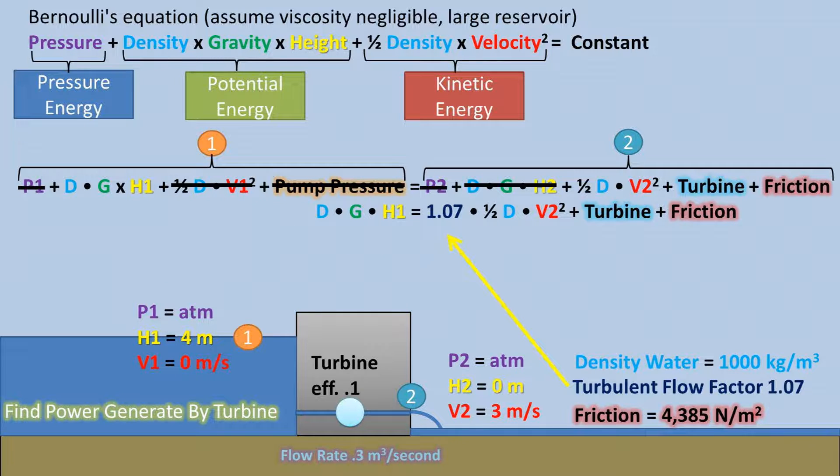We are left with this equation. In this problem, we have a turbulent flow factor. This is basically stating that there will need to be 7% more kinetic energy in order to accommodate the turbulent or chaotic flow. So, we will multiply the kinetic energy portion times 1.07. This factor is typically only multiplied times the kinetic energy portion of side 2.